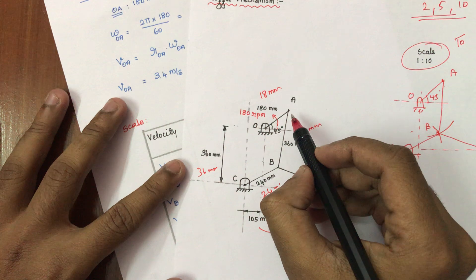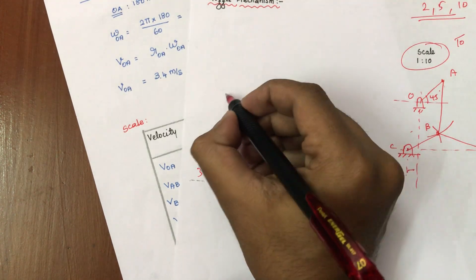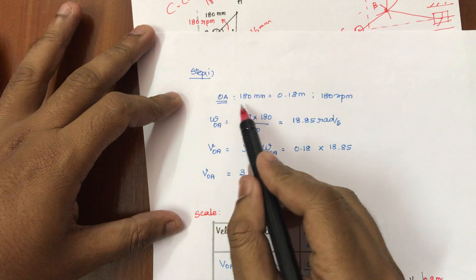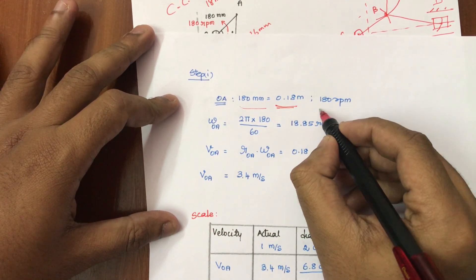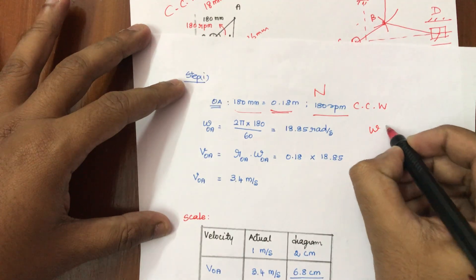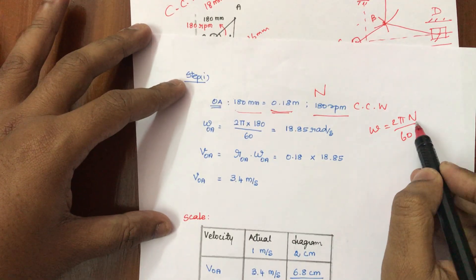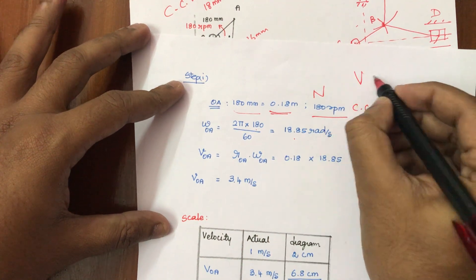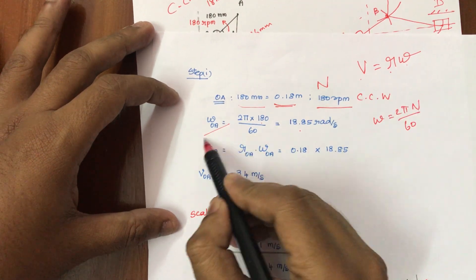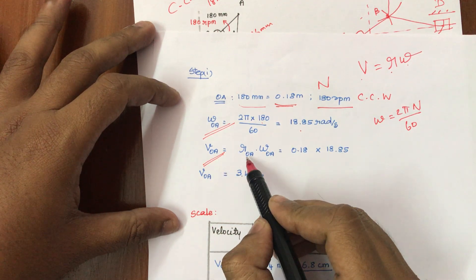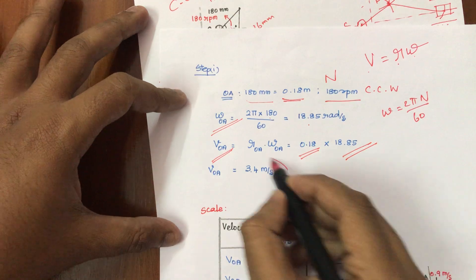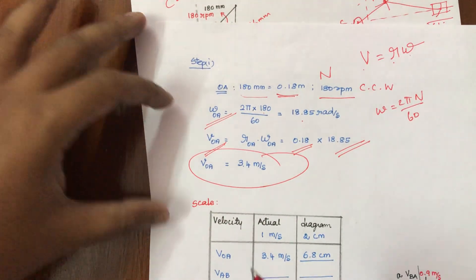In this problem, link OA has a speed of 180 RPM in the anti-clockwise direction. Link OA has a dimension of 180 mm, which is 0.18 m. The angular velocity omega equals 2π N divided by 60. Then the linear velocity V equals r times omega — where r is the length of the link and omega is the angular velocity. So V of OA equals 0.18 m times 18.85 rad/s, giving approximately 3.4 m/s.